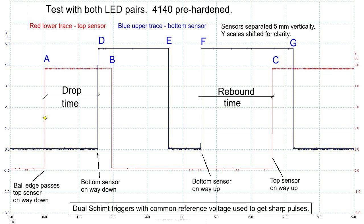The timing intervals that are important to us are from A to D and from F to C. That will give us the time it takes for the ball to pass through the small 5mm gap between the sensors. From that, we can calculate the velocity, both the instant velocity and the rebound velocity.